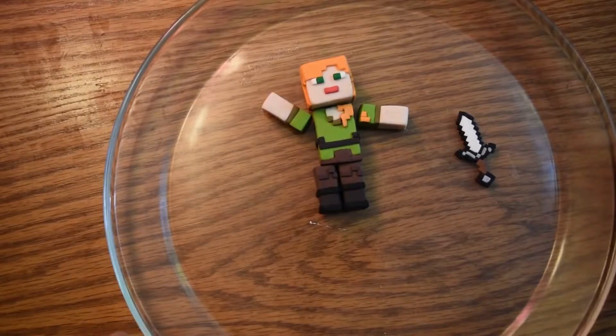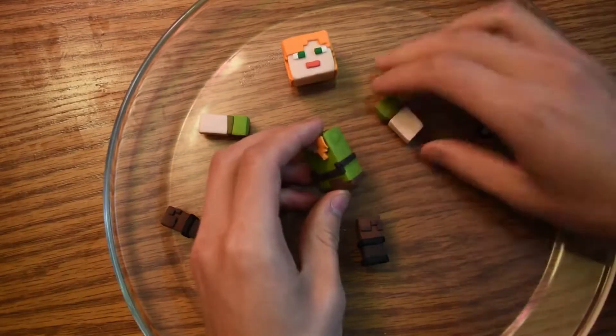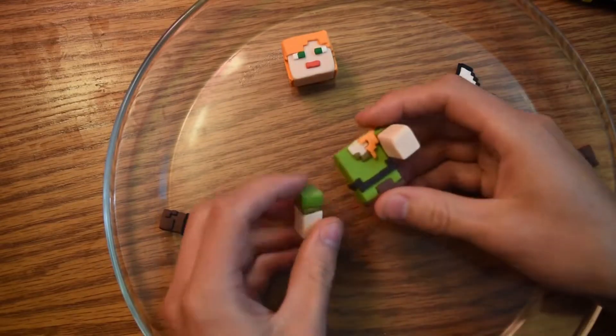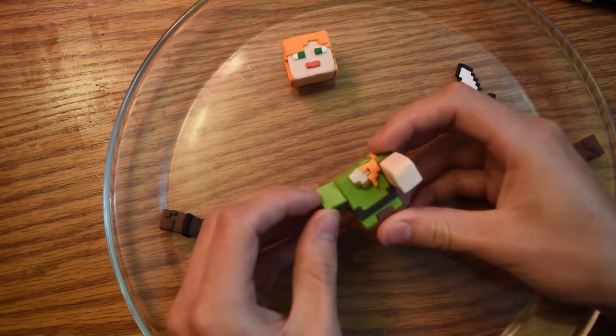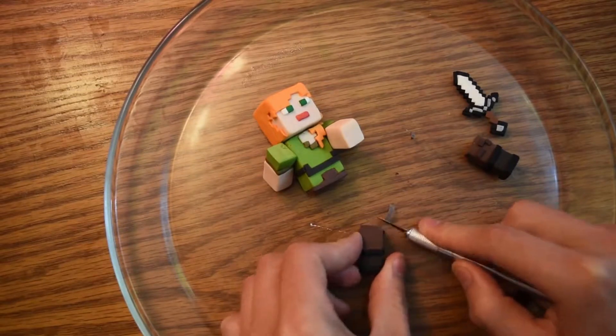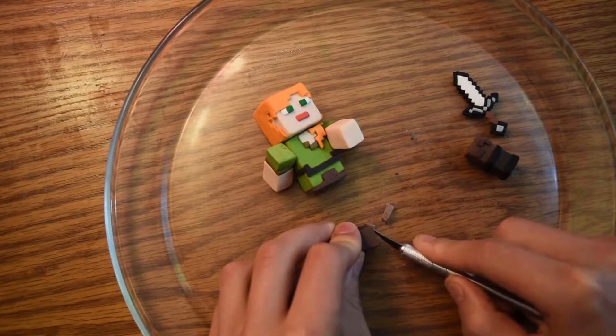After baking, let's start assembling Alex using some super glue. Let's do it in sort of a running position. So let's have one arm forward, one arm back, and let's do that with the legs. So to do that, we'll need to cut them at this slant so that they can be positioned running forward and backwards.